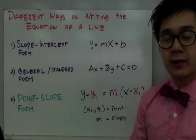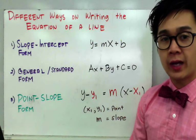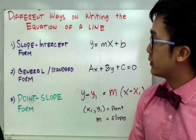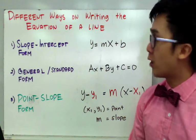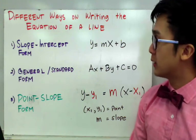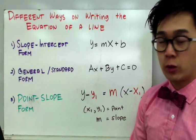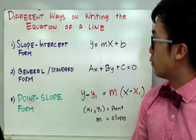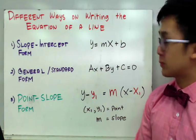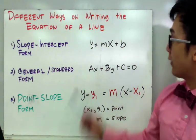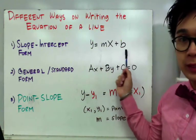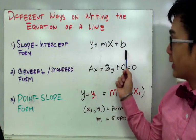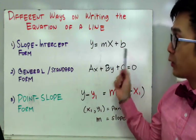We have different ways of writing an equation of a line. The first form that we learned from algebra is the slope-intercept form, given by y equal to mx plus b, where m is the given slope and b is the given y-intercept.